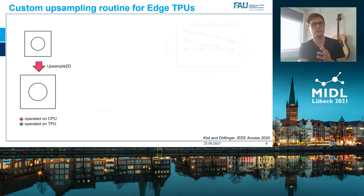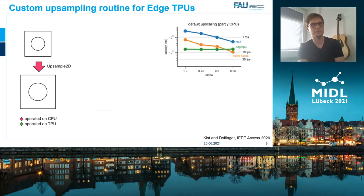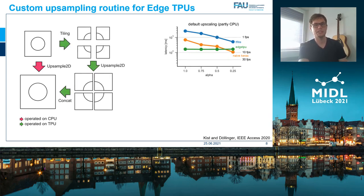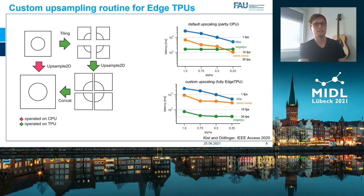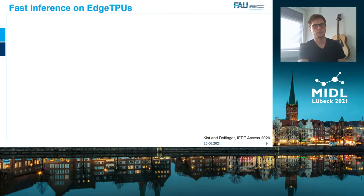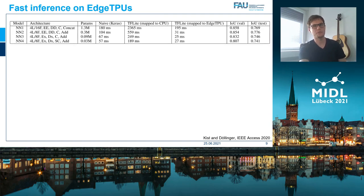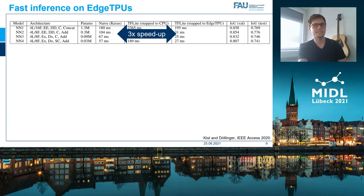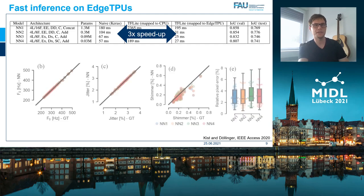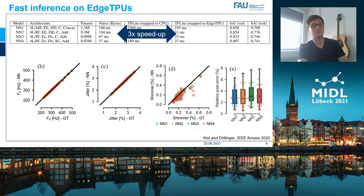Throughout network sizes — where a lower alpha indicates a smaller network — the speed is constantly slower at around 8 to 9 frames per second. However, by introducing a custom upsampling routine, we gain a large performance boost from 9 to 30 fps on the TPU. We selected four interesting network configurations, and when these networks are mapped to the TPU, we gain up to a three times performance boost compared to the native Keras environment. We also investigated if these more efficient networks have an impact on clinical parameters and found no significant changes, suggesting their validity.